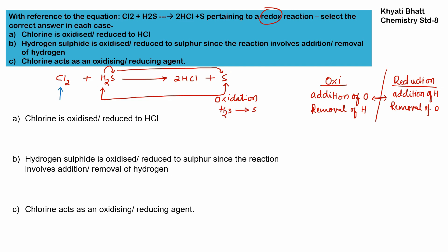Chlorine is alone on the reactant side, but on the product side hydrogen is joined with it to form HCl. So there is an addition of hydrogen to chlorine — this is reduction. Chlorine is reduced to HCl, not oxidized. Since hydrogen is being added, it is a reduction reaction.